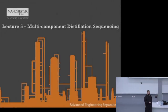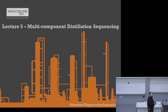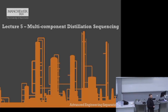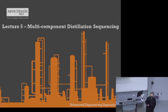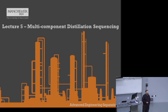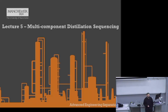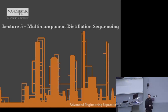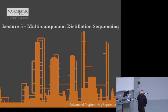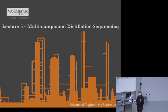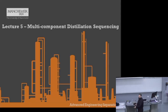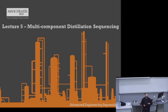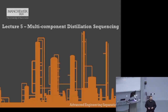Today's topic is multi-component distillation sequencing. When doing multi-component distillation and looking at the shortcut method, you're looking at more than one component in your distillation column. If you've got a mixture of five or six components together but need each component by itself, you'll need more than one distillation column. How do we go about looking at the order of those distillation columns? That's what we're going to be looking at today.